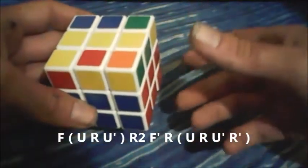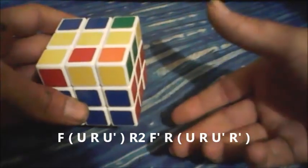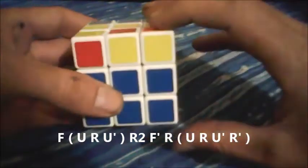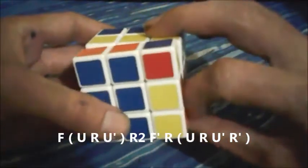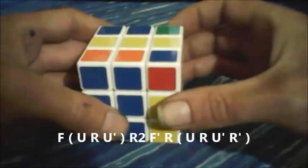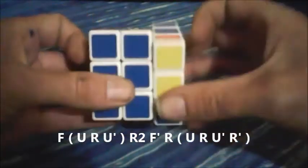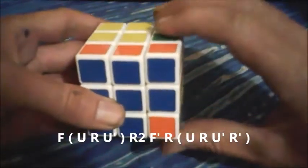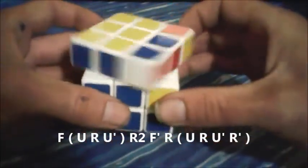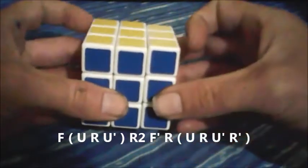We'll go through the algorithm a few times. This time the R prime, R prime is going to be replaced with R2. So we go front, then it's the reverse sexy move: U, R, U prime, R2, F prime, R, U, R, U, R, U prime, R prime.